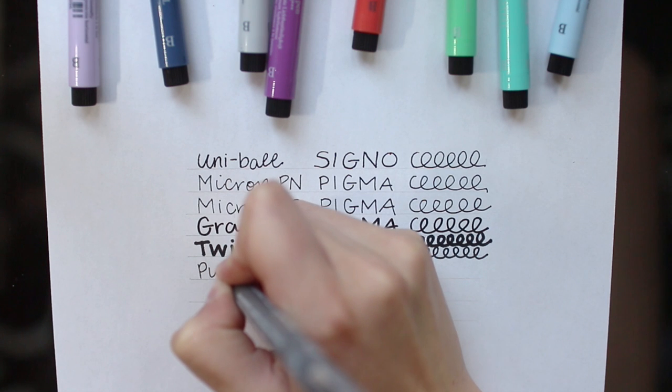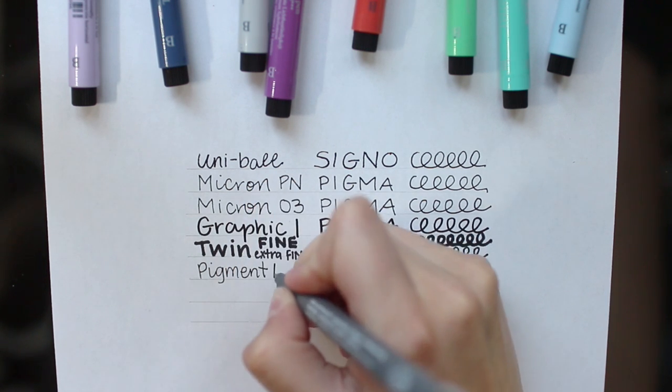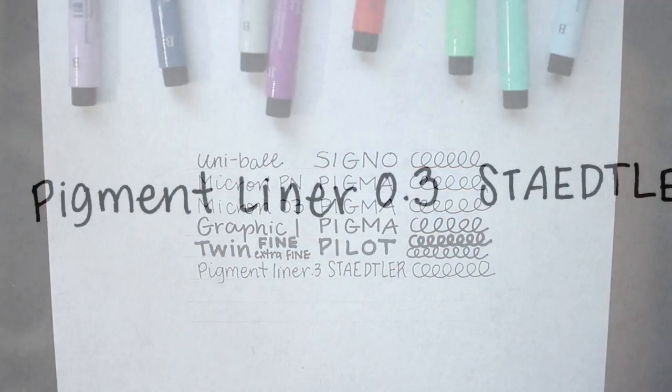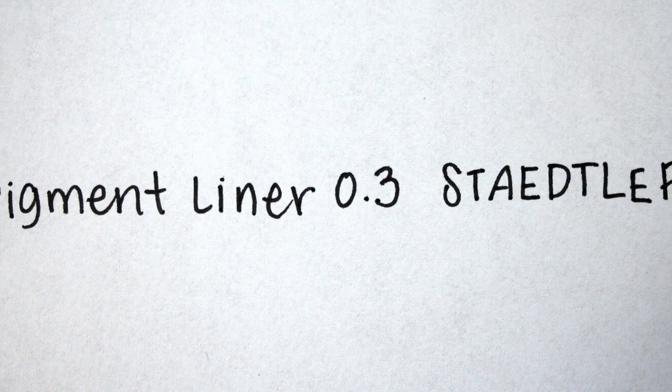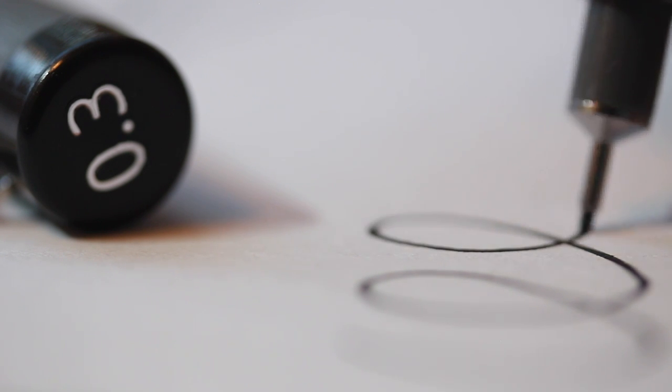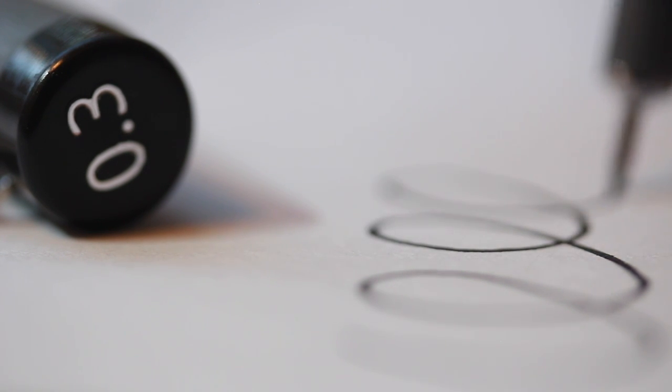Next we have the Staedtler pigment liner. I don't have a lot to say about this pen because it's pretty basic. It has a fine 0.3 millimeter tip and it's not as soft as the Micron pens, but it is smudge proof and very precise. The long metal tip makes it great for using with rulers, so I like to use this pen when I outline my bullet journal during my monthly log. Because it is waterproof, you can also go in with watercolor on top of the pen and it won't smudge.